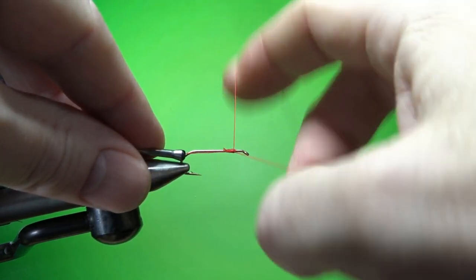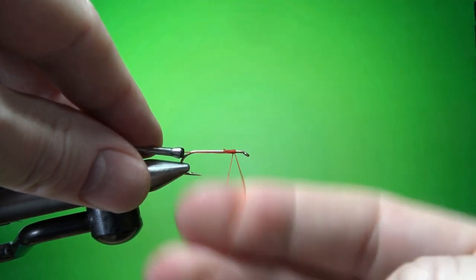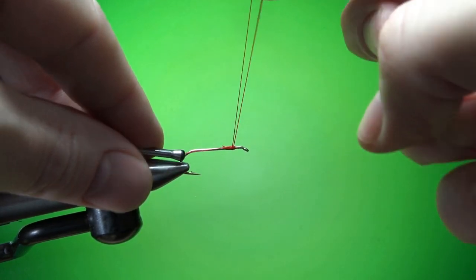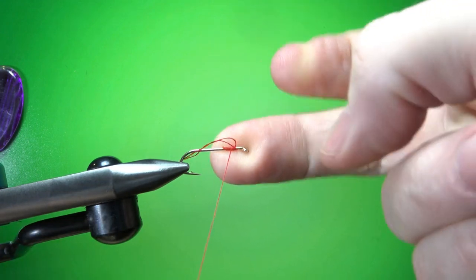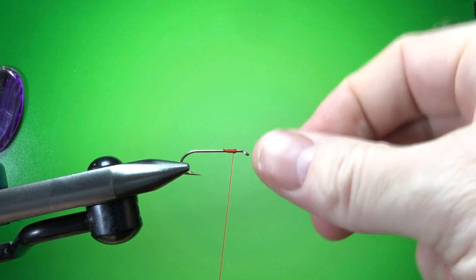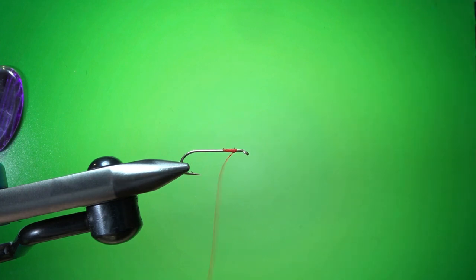Spin it. Two, three, four. Pull one finger out. I can pull it snug. I'll put my finger on the back to keep it from unraveling and then pull it tight. And that is your four turn whip finish.